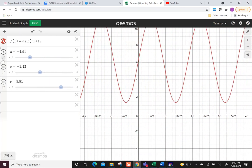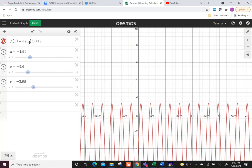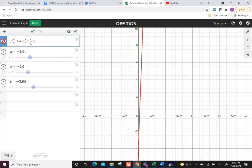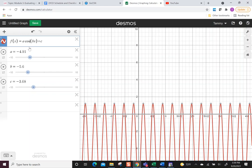But if you wanted to see what that looked like for cosine, I can just go up here and type cosine instead. Same thing.